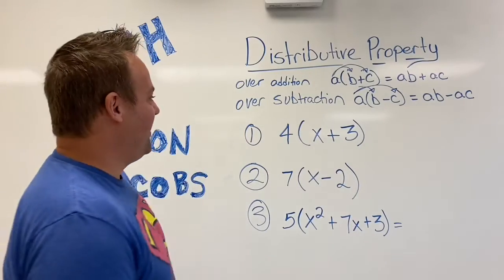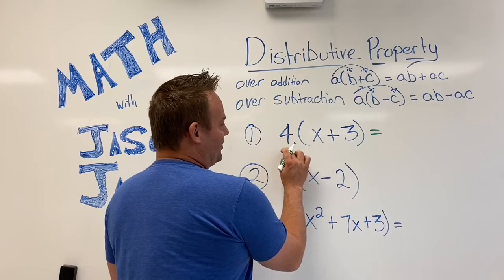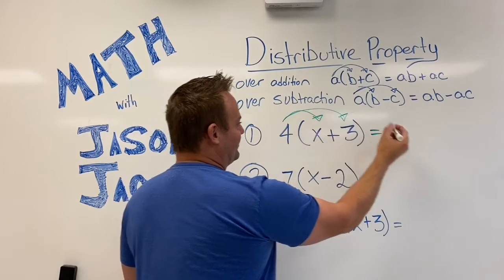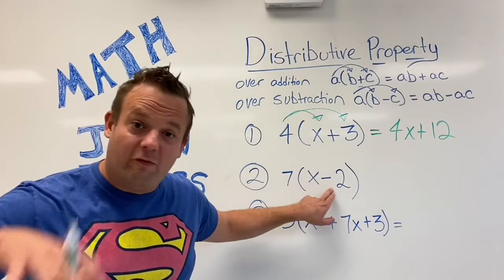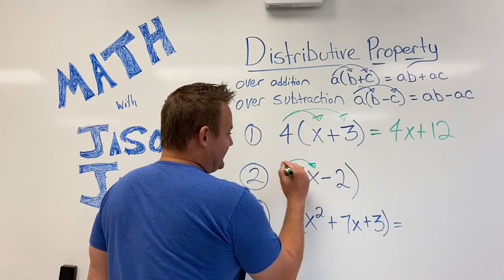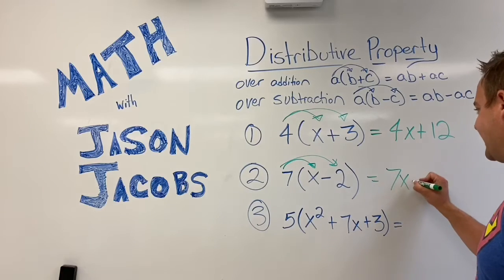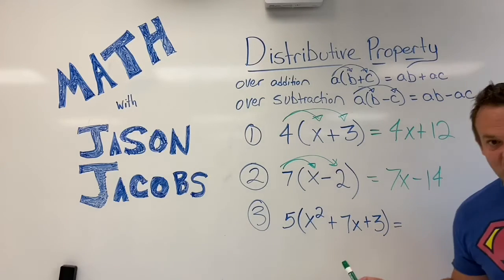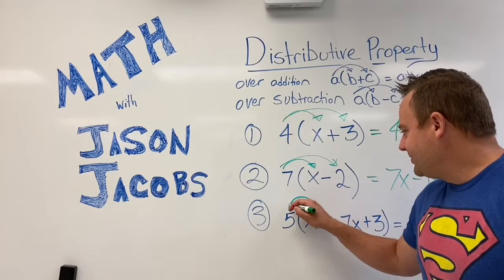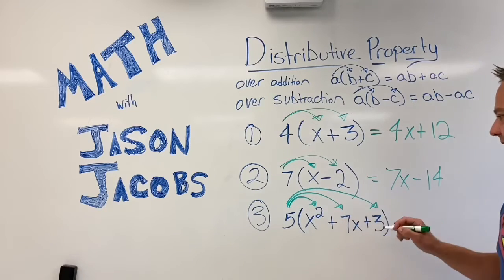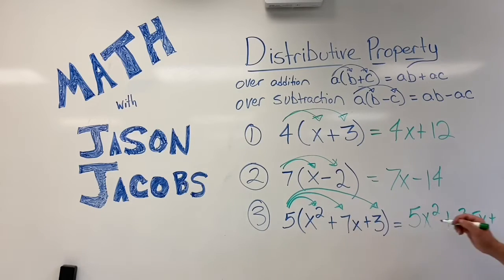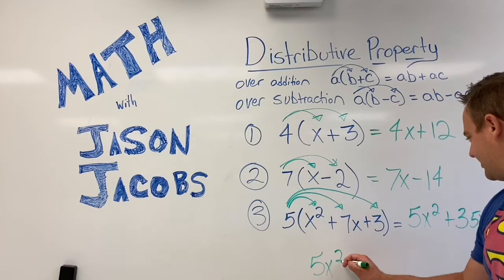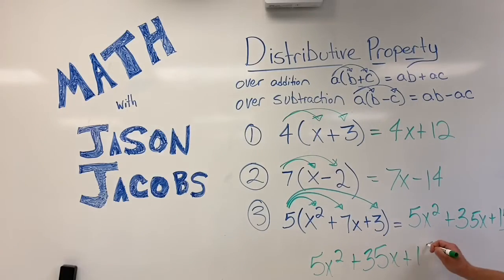Alright, did you pause the video? Let's do it. So you distribute the 4 to the X: 4 times X and 4 times 3, so you get 4X plus 12. That was the Distributive Property over addition. Now this one is the Distributive Property over subtraction: 7 times X minus 7 times 2, giving you 7X minus 14. And now for the hardest one: the 5 distributes to all three terms inside the parentheses — 5 times X squared is 5X squared, plus 5 times 7X is 35X, plus 5 times 3 is 15. So we have 5X squared plus 35X plus 15.